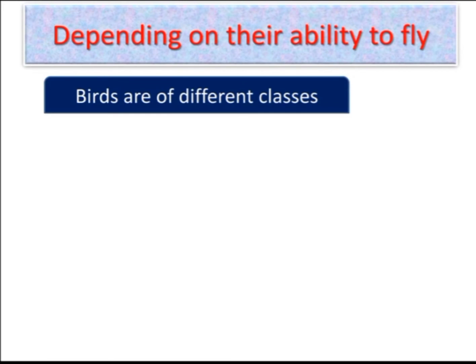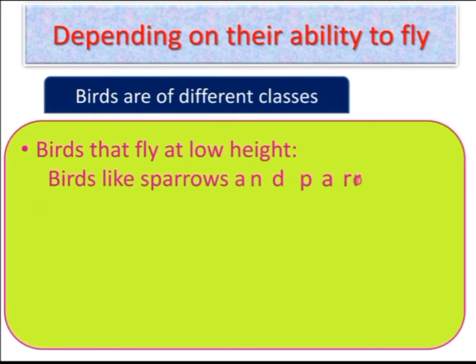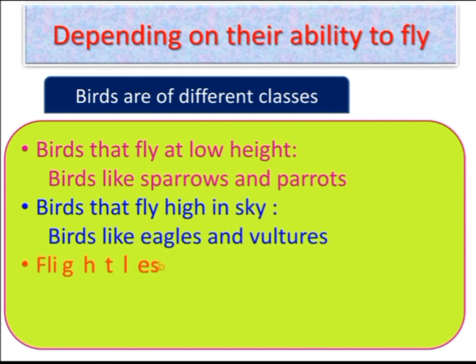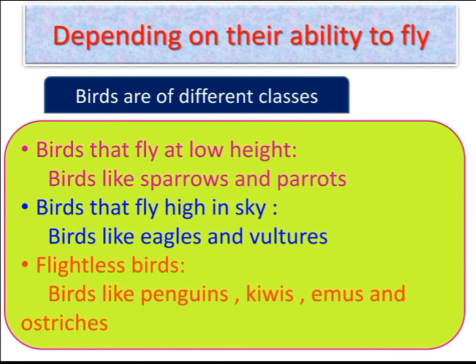Depending on their ability to fly, birds are of different classes. Birds like sparrows and parrots fly at low height. Birds like eagles and vultures fly high in the sky — these are also called birds of prey because they prey on other small birds and animals. There are also flightless birds, like penguins, kiwis, emus, and ostriches. These birds cannot fly, but they can run very fast.